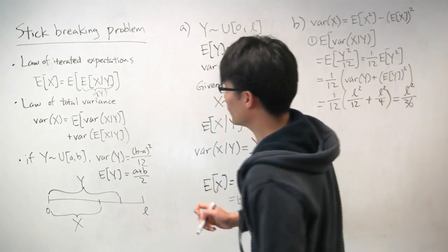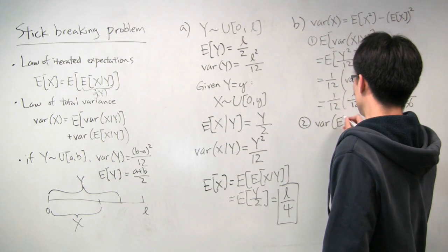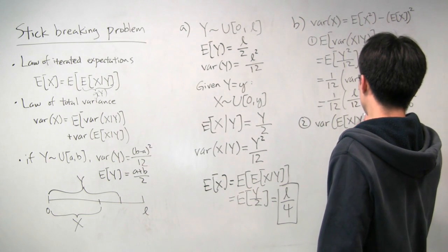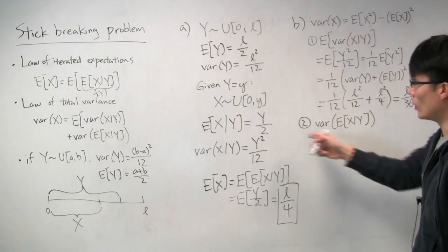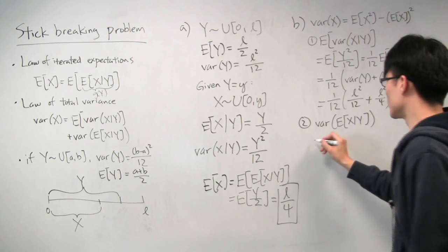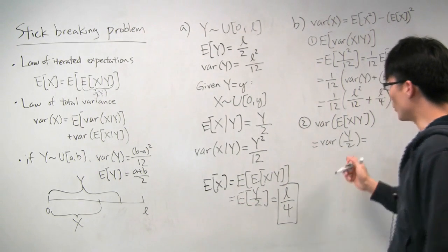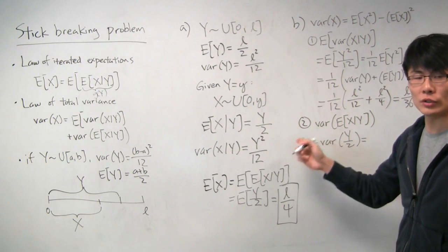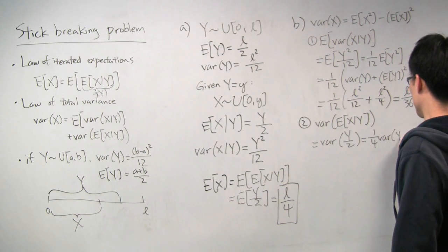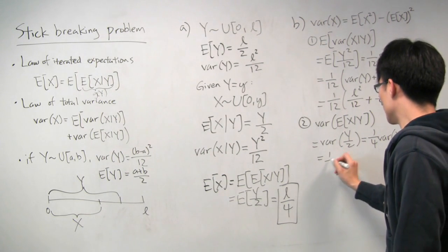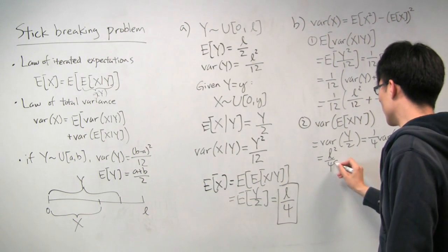Now let's calculate the second term: the variance of the conditional expectation, Var(E[x|y]). We've already calculated that E[x|y] = y/2. So we want the variance of y/2. When you have a constant inside the variance, you pull it out and square it, so you get (1/4) times the variance of y. The variance of y is l² over 12, so this gives us l² over 48.